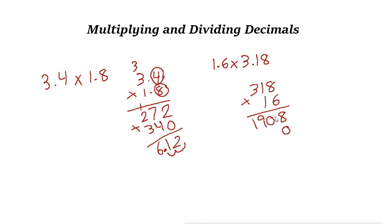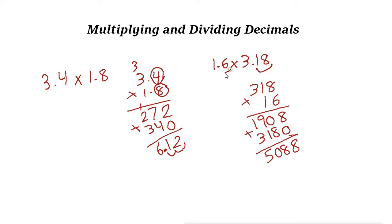Put 0. 1 times 8 is 8, 1 times 1 is 1, 1 times 3 is 3. Add these up: 8, then 0 because 9 plus 1 is 10 write 0 keep 1, then 1 plus 1 is 2 plus 3 is 5. Now count the decimal digits: 3.18 has 2 and 1.6 has 1, so 3 decimal digits total. Separate 3 places — the answer is 5.088.